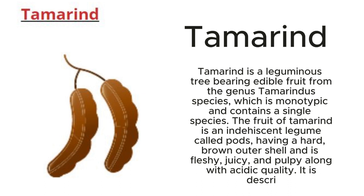Tamarind: Tamarind is a leguminous tree bearing edible fruit, from the genus Tamarindus, which is monotypic and contains a single species. The fruit of tamarind is an indehiscent legume called pods, having a hard brown outer shell and is fleshy, juicy, and pulpy along with acidic quality.